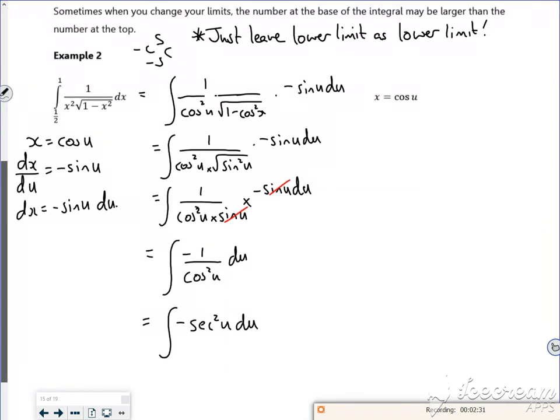So let's think about our limits now. So for x is a half, because I started off with x equals here, so I've got a half is cos u. So if I do the inverse cos of a half, I'm going to get pi by 3. So I'm going to use the bottom limit as pi by three. And then for the upper limit when x is 1,